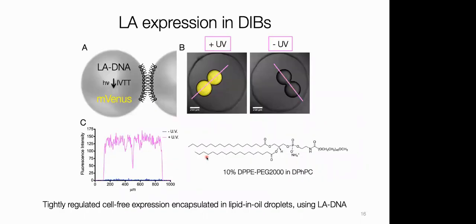We then put this into droplets — two droplet systems with the cell-free expression system inside. If you don't shine light, nothing gets expressed — just background noise. When you shine light it turns on and you get expression.